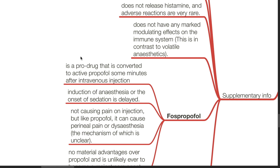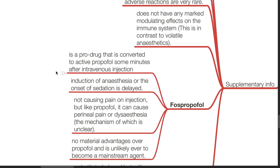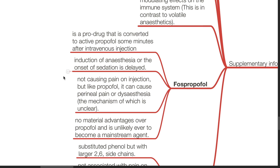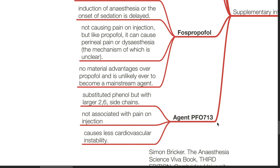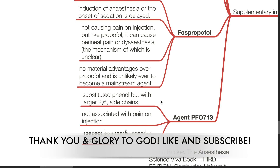Phosphopropofol is a prodrug converted to active propofol some minutes after intravenous injection, so induction of anesthesia and onset of sedation is delayed. It does not cause pain on injection, but like propofol it can cause perineal pain or dysaesthesia, the mechanism of which is unclear. There are no material advantages over propofol and it is unlikely to become a mainstream agent. Agent PFO713 is a substituted phenol with larger 2,6 side chains; it is not associated with pain on injection, causes less cardiovascular instability, and may replace propofol in the future.